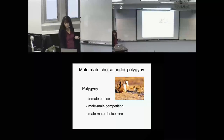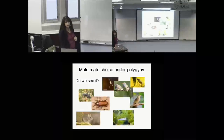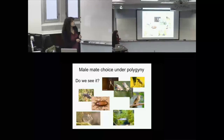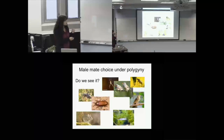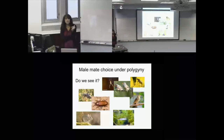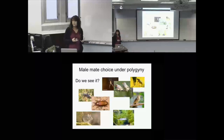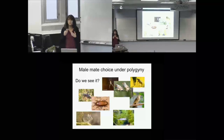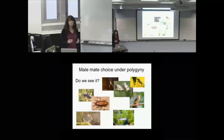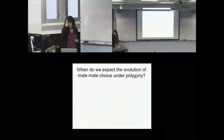Do we see male mate choice under polygyny? We do, but not for every character and not in every situation. In zebra finches and orb-weaving spiders, males mate based on a trait correlated with high fecundity. In armored ground crickets and mealworm beetles, males choose based on female reproductive status — virgin or not. In sticklebacks, males choose based on readiness to mate. In house mice, there's evidence they choose based on infectivity status. They're not choosing on random traits or the wide variety of traits we think of with female choice.